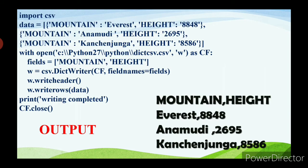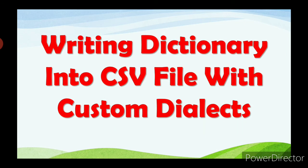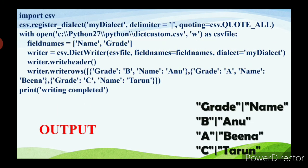The next one is writing a dictionary into a CSV file with custom dialects. You register csv.register_dialect with 'my_dialect', setting delimiter to pipeline and quoting=csv.QUOTE_ALL to give double quotes to all data. In the above program, a custom dialect called my_dialect with pipeline as delimiter uses field names and headings of each column to write a CSV file using the DictWriter method.